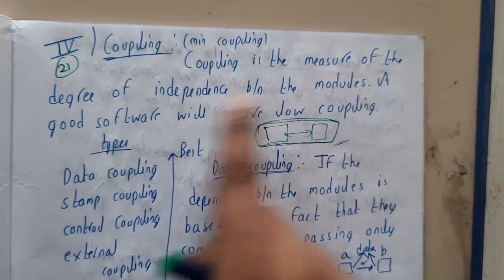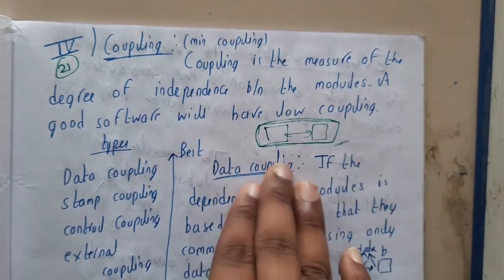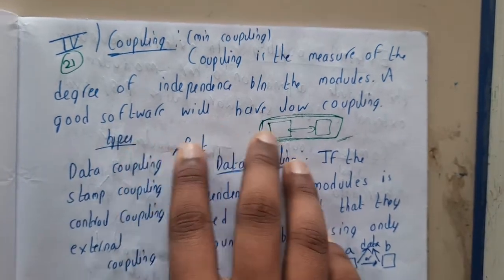Coupling is the measure of the degree of independence between the modules - whether they are independent or dependent on each other. Good software will have low coupling.